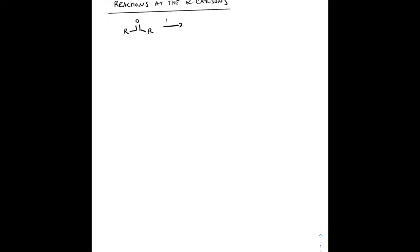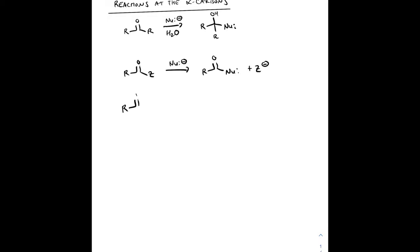Today's discussion is going to be on reactions at the alpha carbon. We've been doing a lot of carbonyl chemistry where a nucleophile attacks the carbonyl carbon, but now we want to talk about some other reactions with carbonyls — specifically at the alpha carbon. An alpha hydrogen can actually be removed to form something called an enolate.